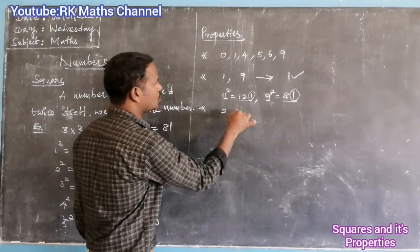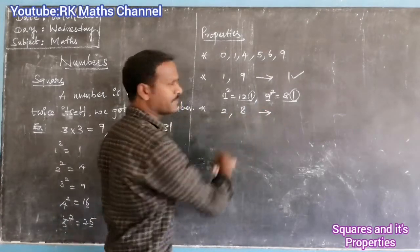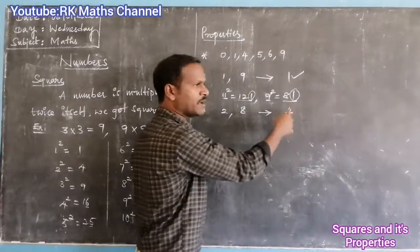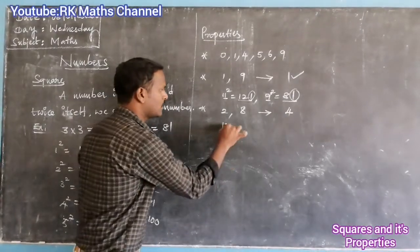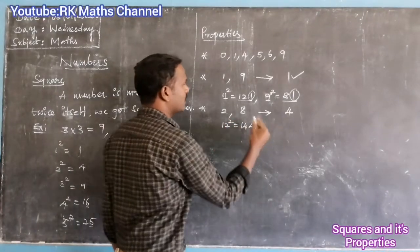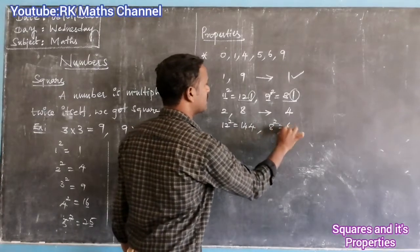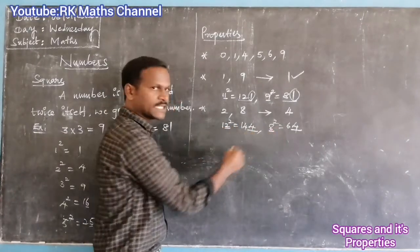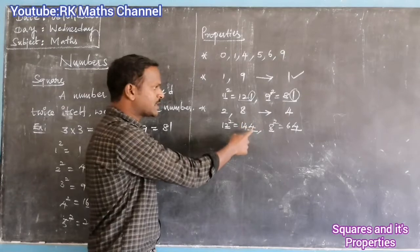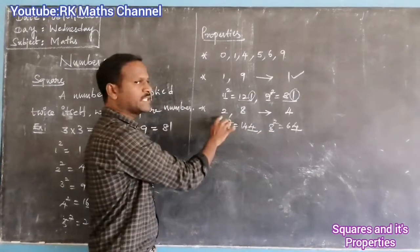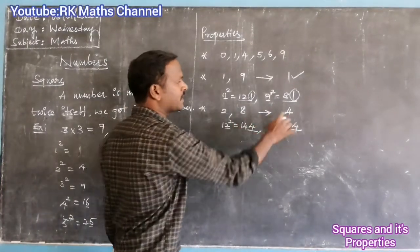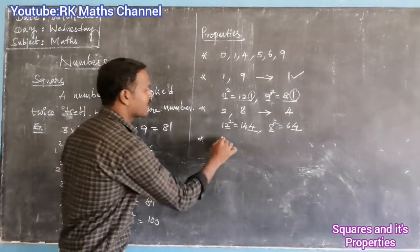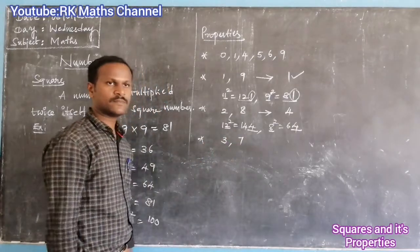If the unit place of a number is 2 or 8, then the square's unit place is 4. For example, 12 squared is 144, and 8 squared is 64. So when the unit place is 2 or 8, the square always ends in 4.